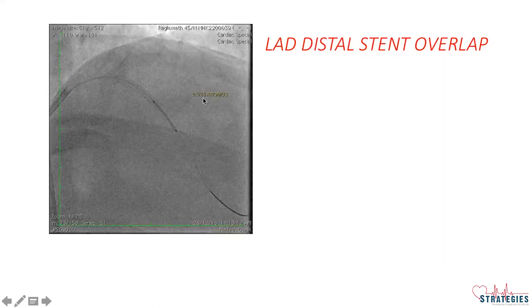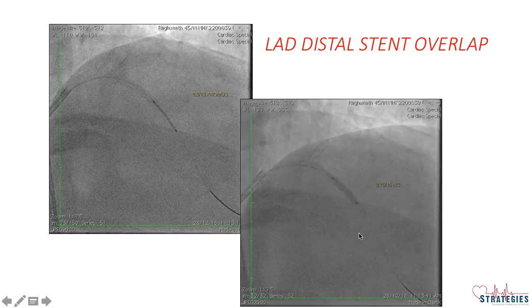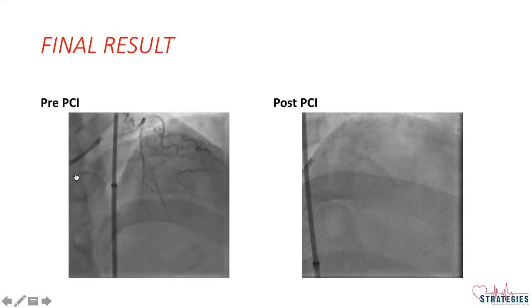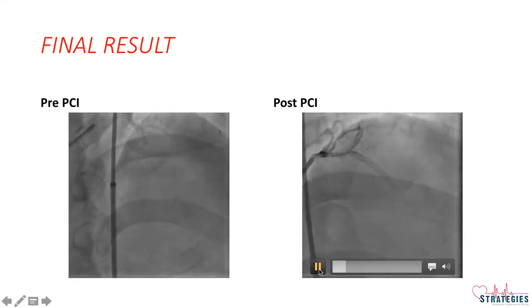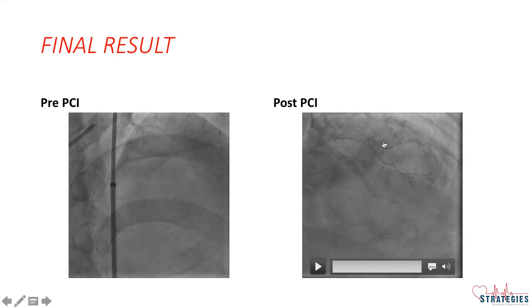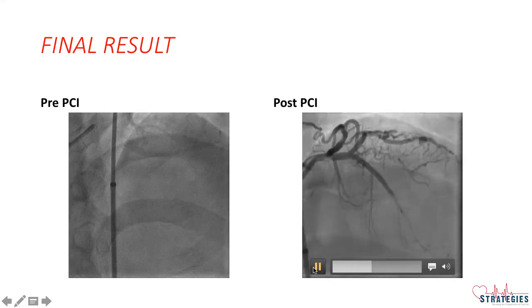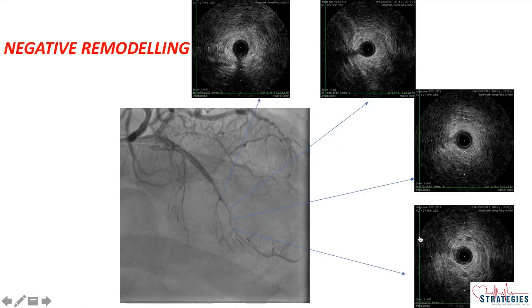We took a 2.5 by 15 stent — as the reference is only 2.5 — with a ploid, and then we optimized. This is the pre-PCI and this is the post-PCI angio. We can see there is a diagonal filling retrograde from the first diagonal and also an undersized LAD distally. I did IVUS to understand what is going on — IVUS showed absolutely no plaque there and no blocking, and the vessel size is quite small compared to the distal LAD.